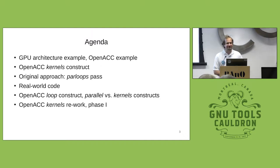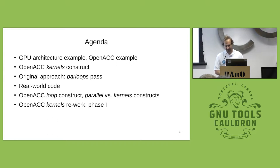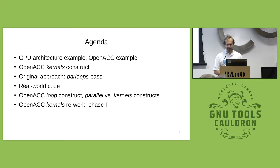Most here have seen some OpenACC before, but I will give a short introduction of where this is all coming from and what it's useful for. Then I'll introduce the OpenACC kernels construct in contrast to some other parallelization constructs that OpenACC has. I'll show the original approach we took to implement this, which didn't work out, unfortunately, or only in a very limited way. Then we'll re-examine what real-world code looks like and how we can benefit from that to do a new implementation of the OpenACC kernels construct. Then I will show phase one in more detail — the transformation steps we have implemented, which we are in the process of getting integrated in GCC trunk.